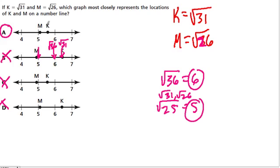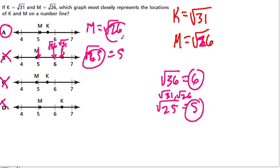Now, let's think about, for a moment, why is m closer to 5 than k? Well, if m is the square root of 26, and the square root of 25 equals 5, well, 25 and 26 are only one apart. Whereas, with k, which equals the square root of 31, that is 6 away from 25.